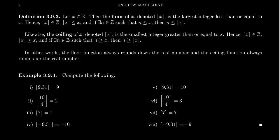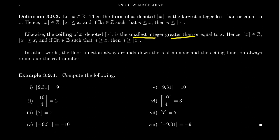The counterpart of the floor function is the ceiling function. If X is a real number, the ceiling of X — denoted with brackets that have a bend only at the top — is defined to be the smallest integer that is greater than or equal to X. The floor was the largest integer less than or equal to X, but the ceiling is the smallest integer greater than or equal to X. Just like the floor, the ceiling is always an integer even if X is real, and it's the least upper bound of integers relative to your real number.